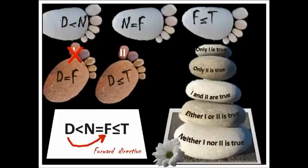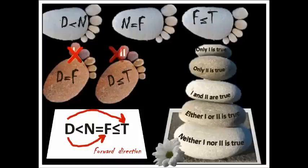Now the second conclusion: d less than or equal to t. Symbols between d and t: less than, equal to, and less than or equal to. Less than has the highest priority, so the answer is d less than t. But conclusion two says d less than or equal to t — so conclusion two is also wrong. The correct option is: neither one nor two is true.